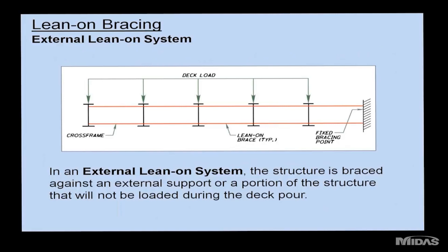A second form is the external lean-on system, where no cross-frames exist within the loaded portion of the bridge. Instead, bracing is provided to an external point — previously used in stage construction by bracing to an adjacent span that won't have deck loaded on it. When the loaded portion deflects, there are no cross-frames to torsionally restrain the girders, so they can go straight down and ideally remain plumb.